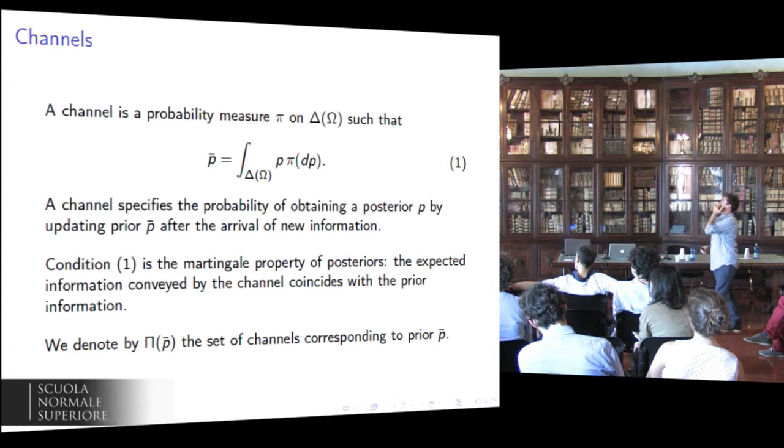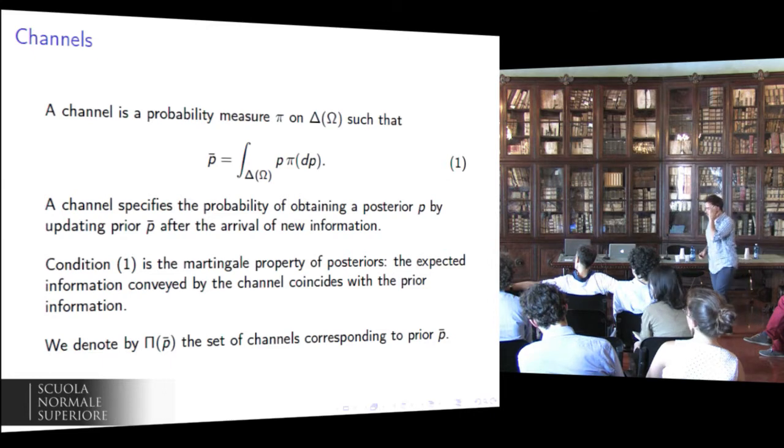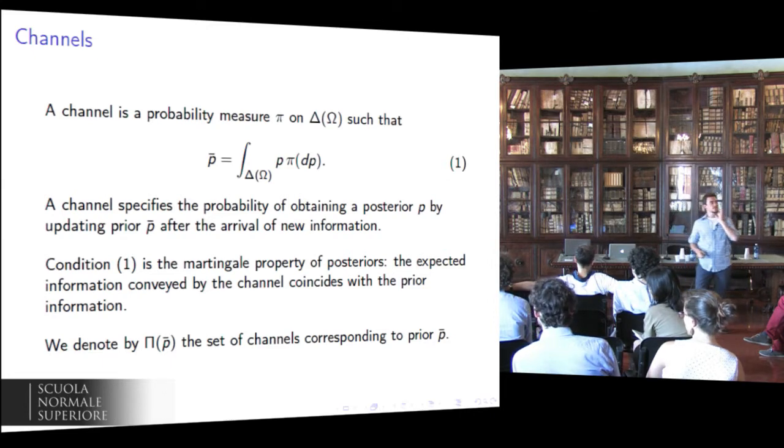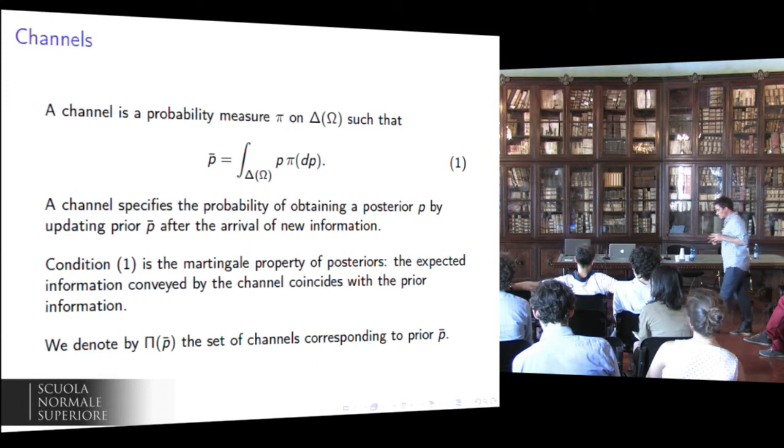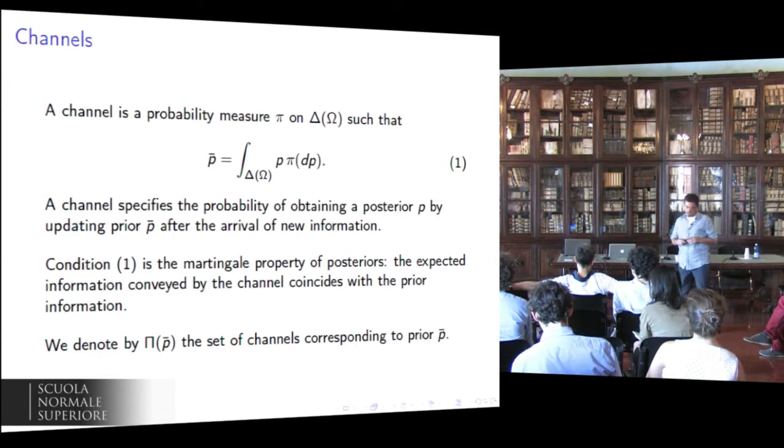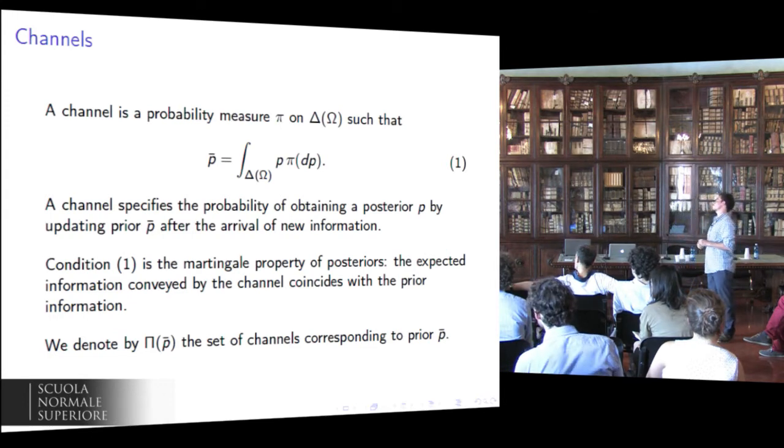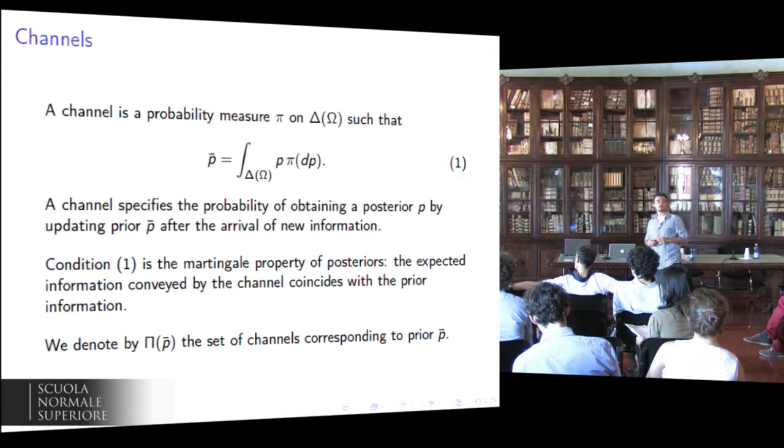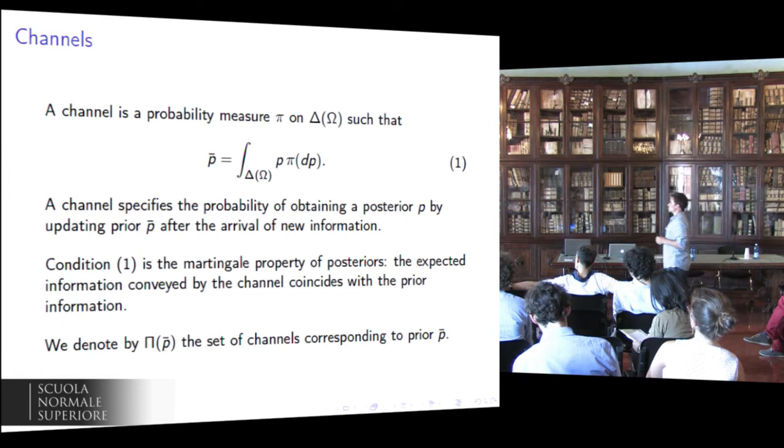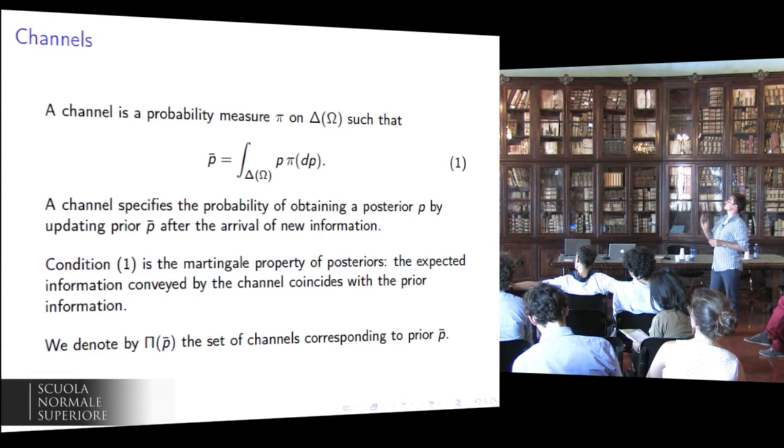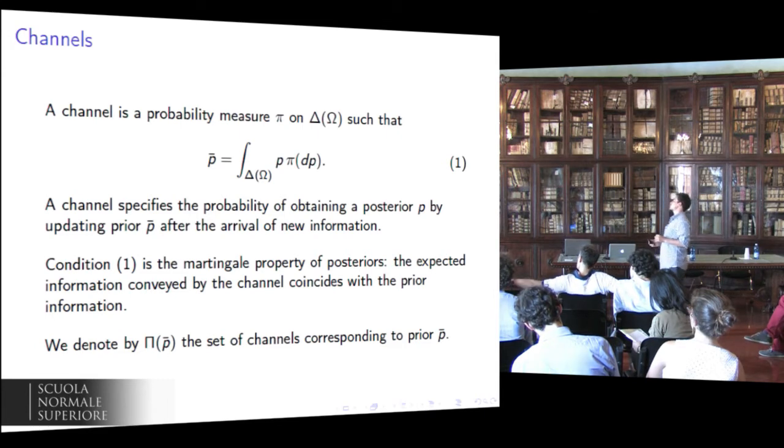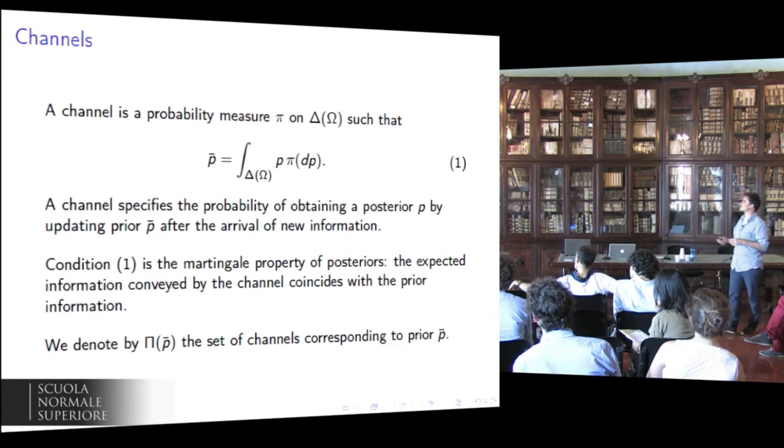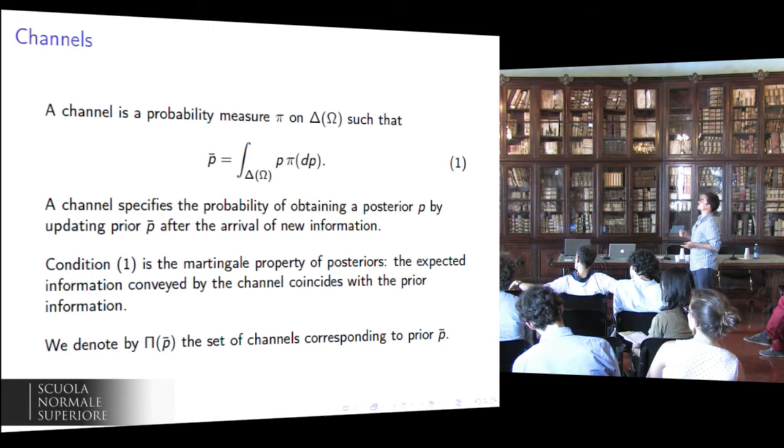Everything is basically standard. Now, following Sims' approach, we want to use the tools of information theory to model attention. The most important object is a channel. A channel is a way to formalize the idea of an information source. More formally, a channel is a probability distribution over posteriors, such that the expected posterior is equal to the prior.